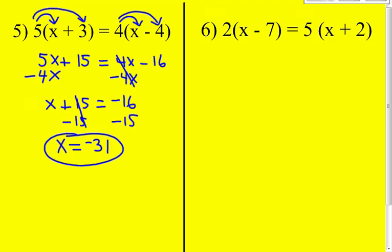For number 6, again, distributive property. You have to get rid of the parentheses first. 2 times x is 2x. 2 times negative 7 is negative 14. Bring down the equal sign. 5 times x is 5x, and then 5 times 2 is 10.